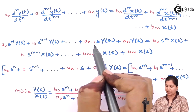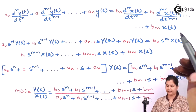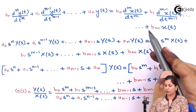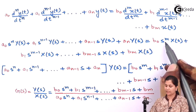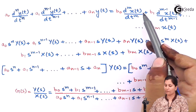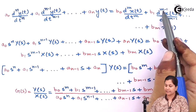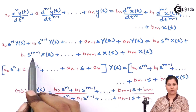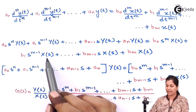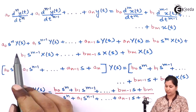Similarly, we take the Laplace transform of all the terms on the left-hand side. The Laplace transform of the terms on the right-hand side will be b0 * s^m * X(s), where X(s) is the Laplace transform of x(t), and then b1 * s^(m-1) * X(s), and similarly the Laplace transforms of all remaining terms are found out.